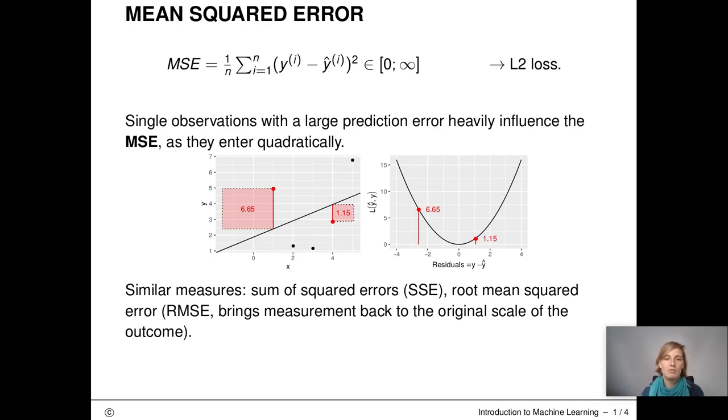Similar measures to the MSE are the sum of squared errors or the root mean squared error. The SSE is just the MSE times the number of observations n and the RMSE is like the MSE just on the original scale of the outcome because we take the root.